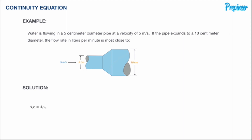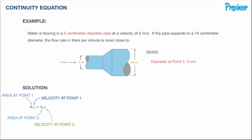Pulling that general equation back to our problem, we have A1, V1, A2, and V2. At point one, the pipe diameter is 5 centimeters, which we convert to 0.05 meters, and the velocity is 5 meters per second. The pipe expands to a 10 centimeter diameter at point two, or 0.1 meters.